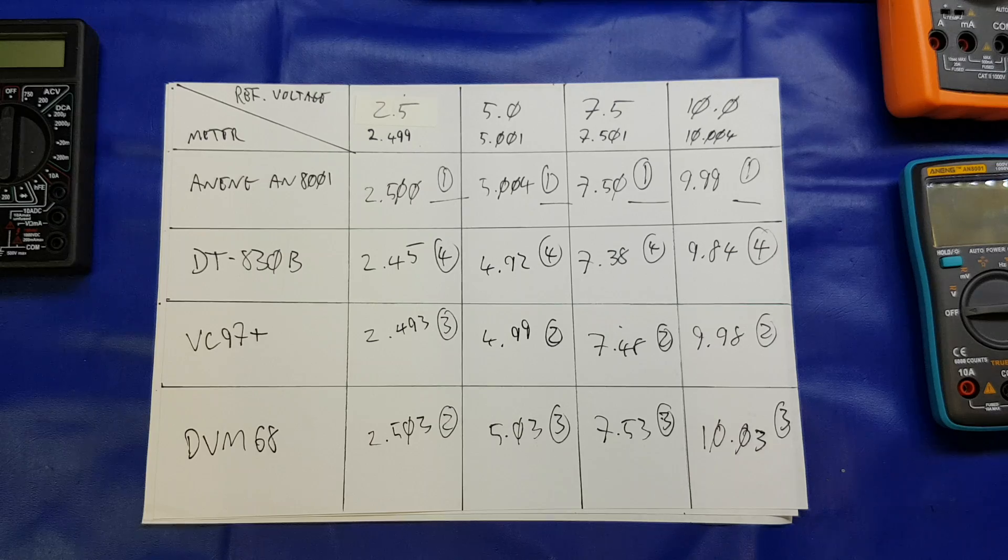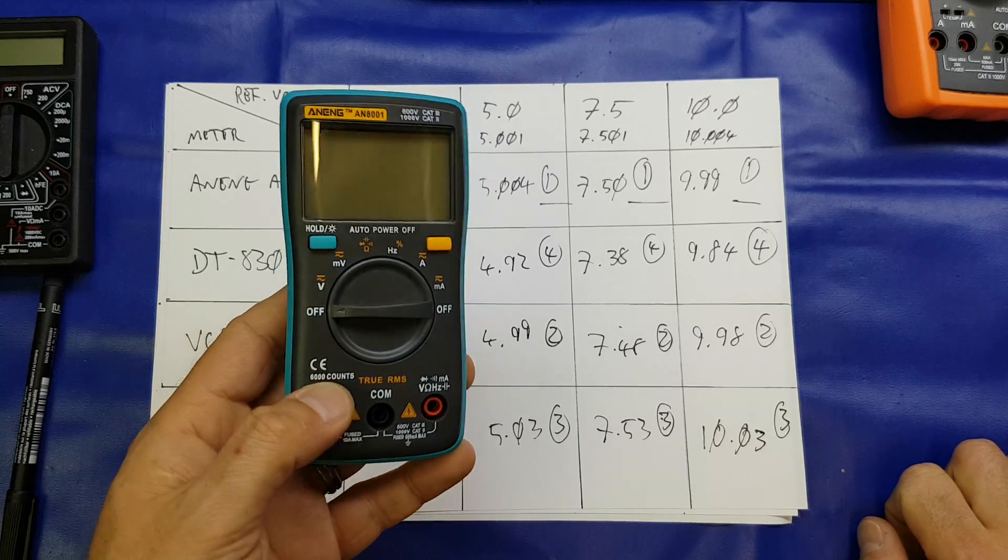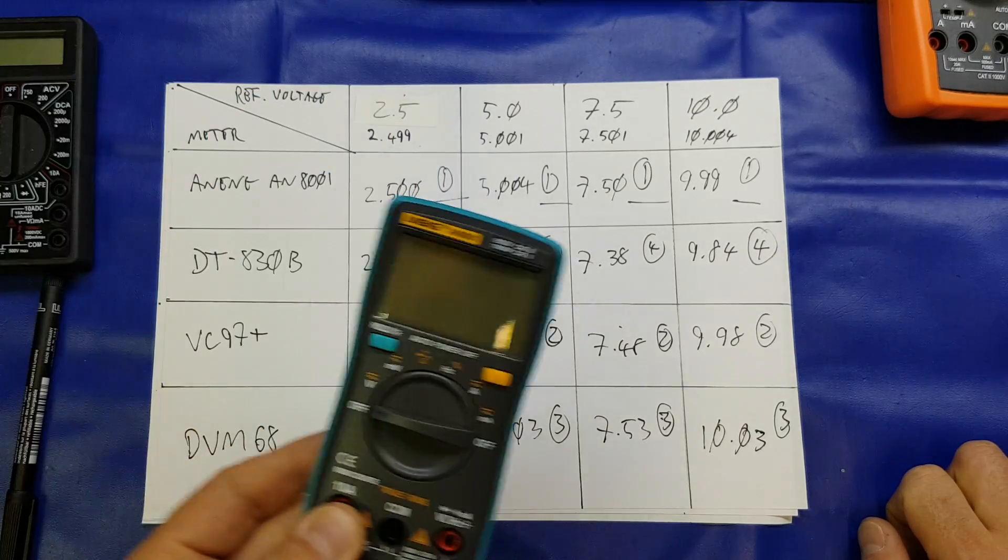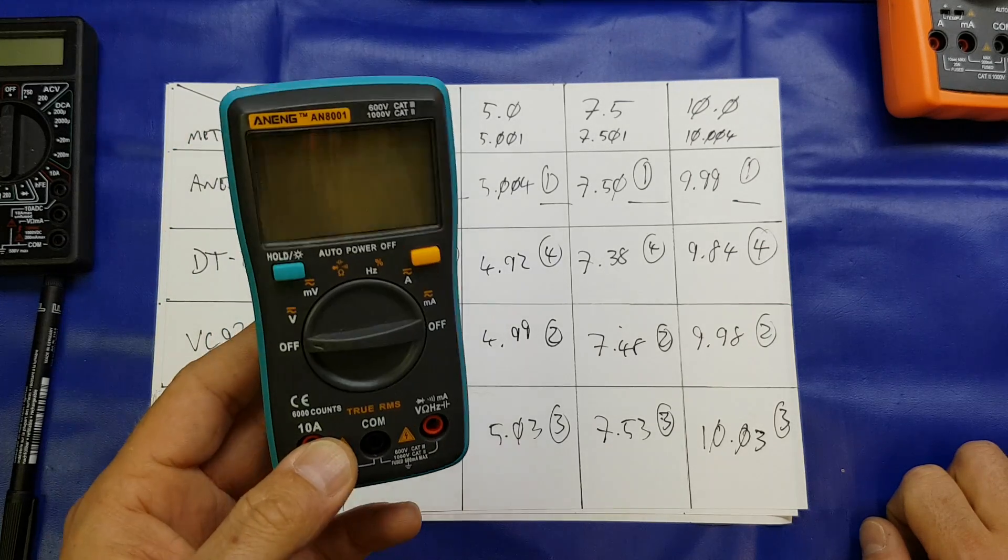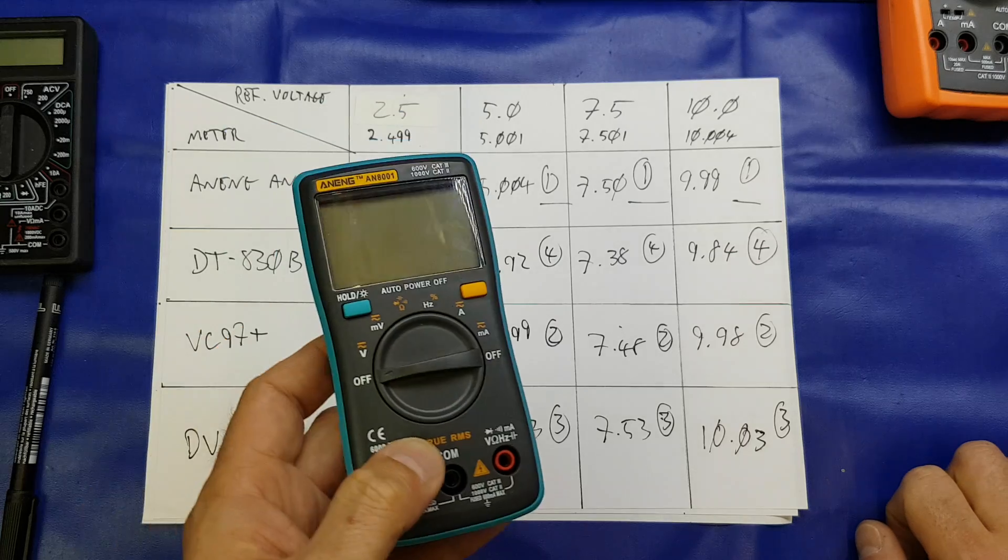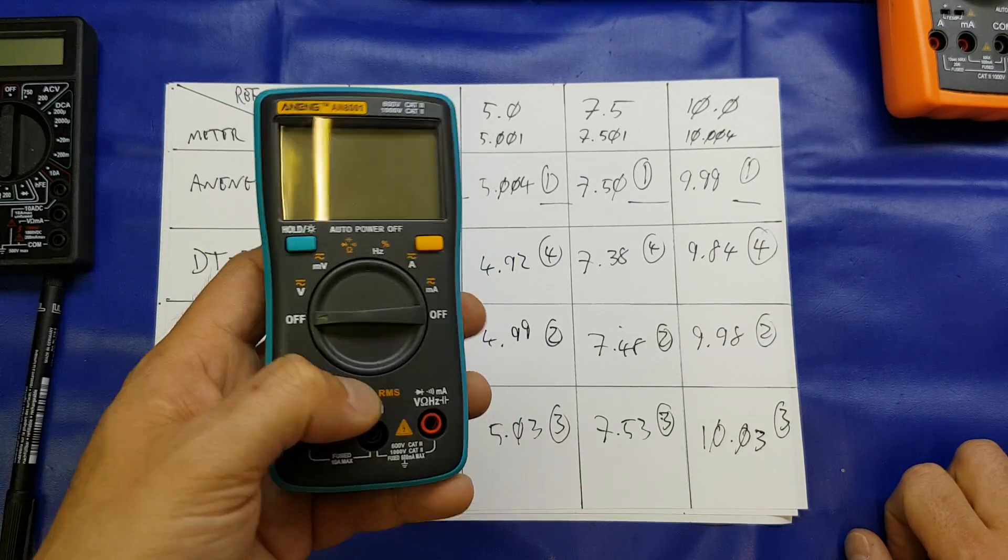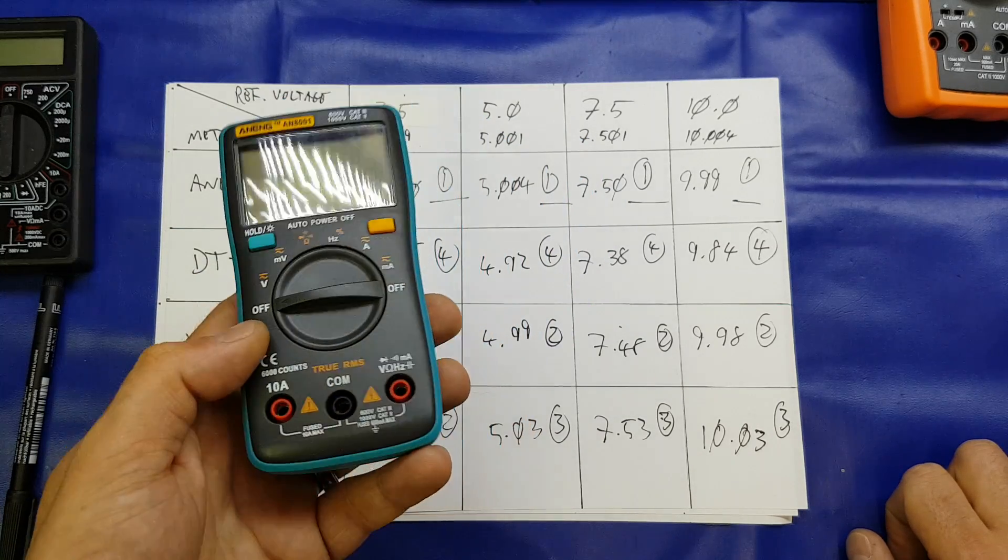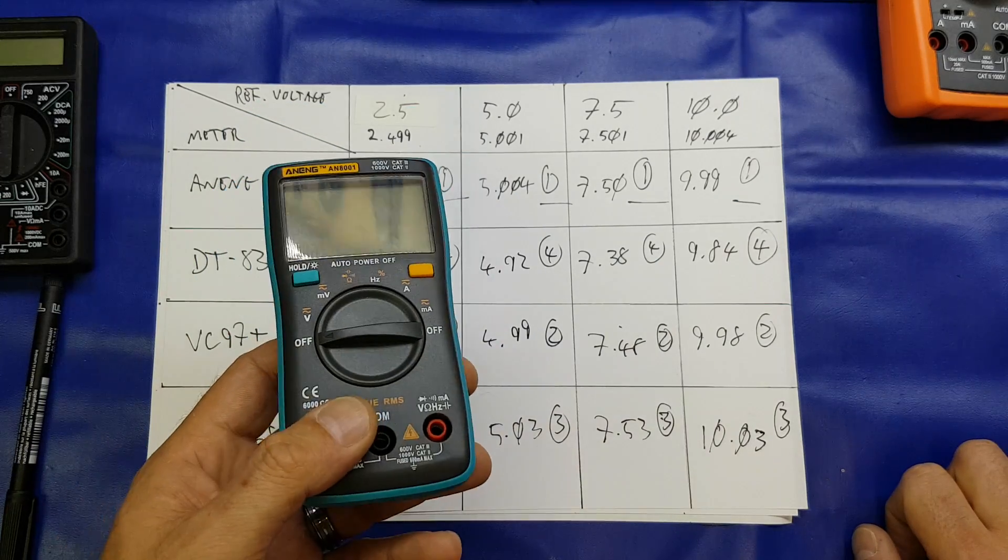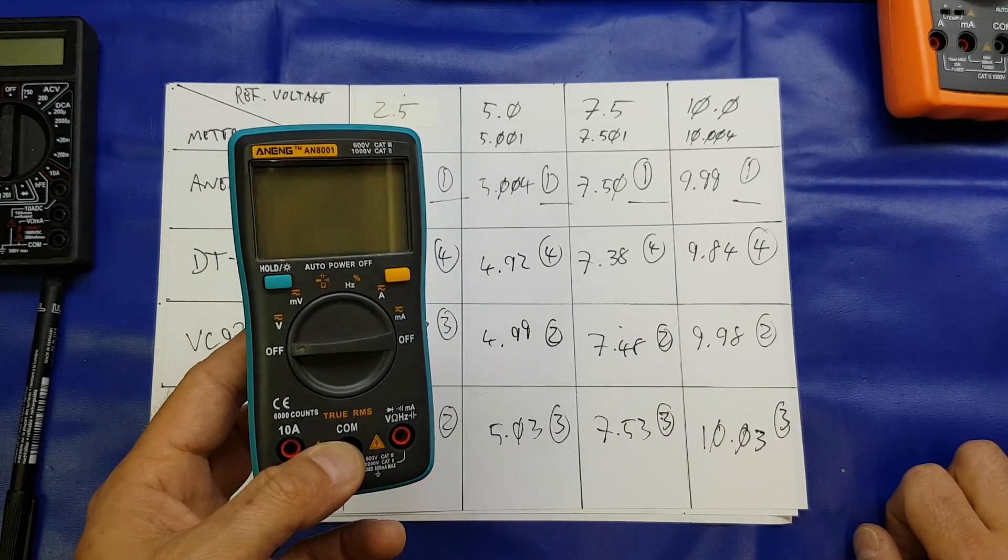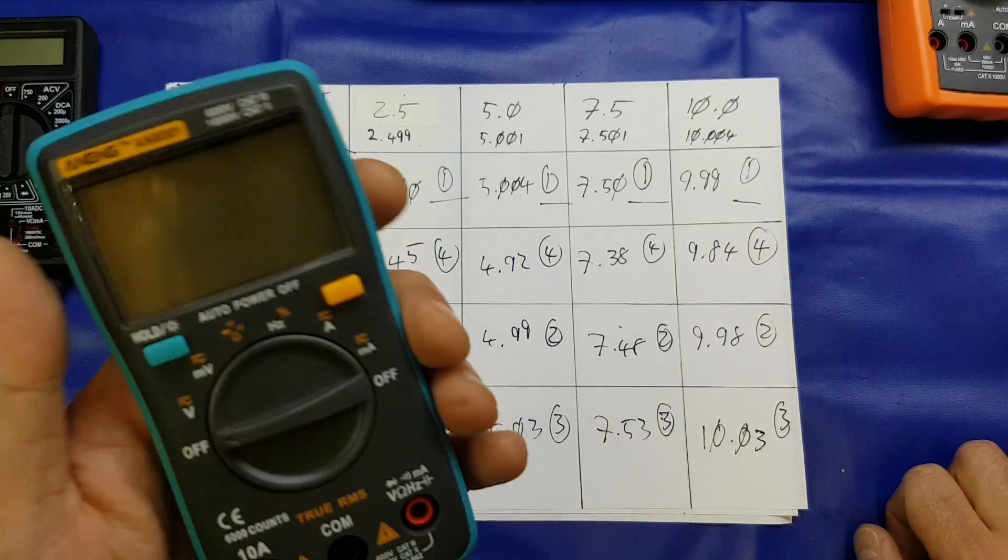So, what would my recommendation be? No question about it, it's the 8001 from Aneng. For the price, £10, remember, £10 including delivery. You can get it off Banggood. You can get the 8002 or 8004, I think it is, I had a look just before making this video, that's the one that's got the temperature measurement, etc. Just £11 or £12 including delivery to the United Kingdom, and of course, it's free worldwide shipping, so I think it was around maybe $16, something like that. For the price, definitely this meter.